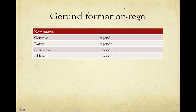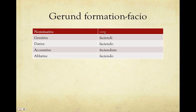Rego, third conjugation, consonant stem. Regendi — there's our stem, which we can get from the second principal part by dropping the '-re': regendi, regendo, regendum, regendo. Facio is our third i-o, our third i-stems.